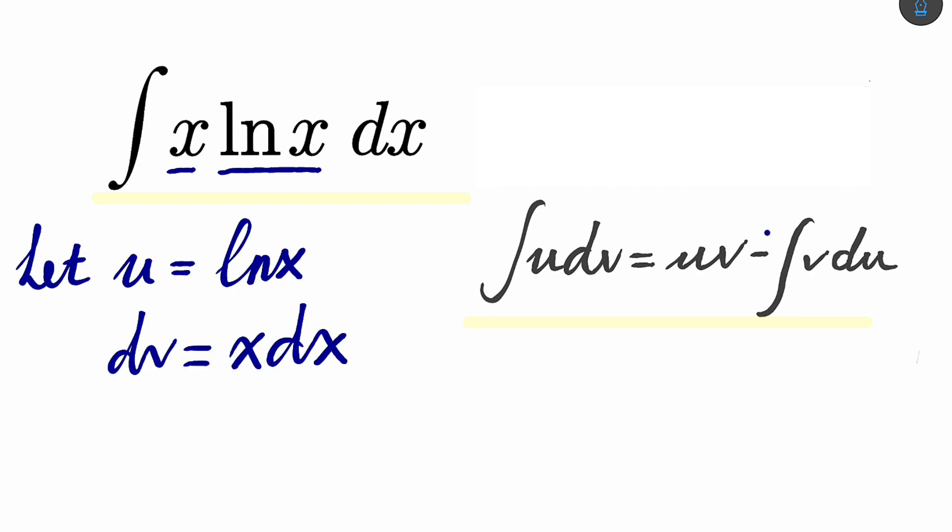You've noticed that dv is x dx. And now, what's the value of x dx? What's the primitive of x? The primitive of x is x squared over 2. So dv is d x squared over 2.